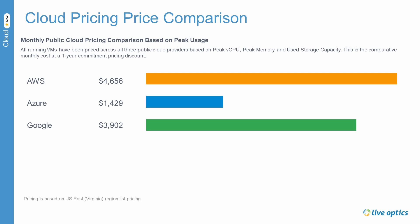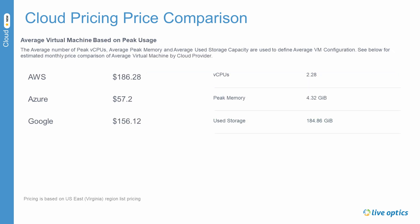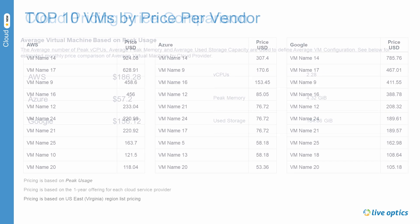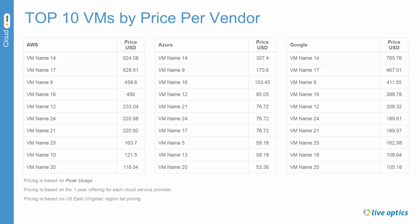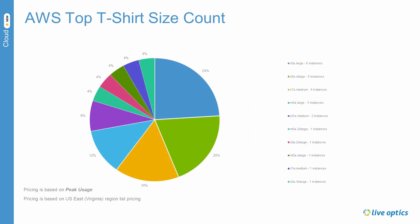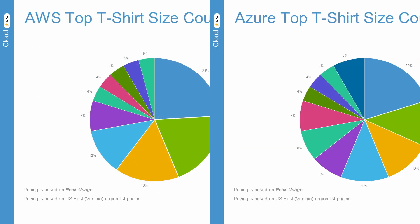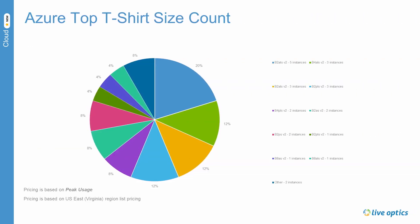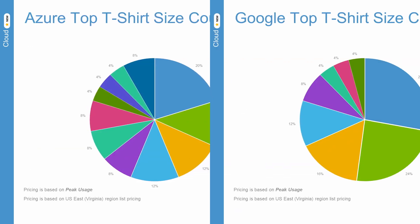Here you'll notice that the slides are similar to the previous section. However, the cost will be lower. The average VM size will be smaller, the top VMs will be different, and the t-shirt size counts will be different as the matching VM sizes have changed.